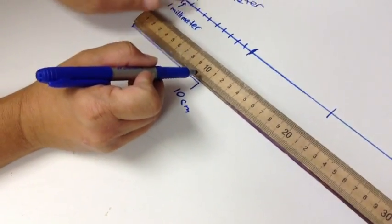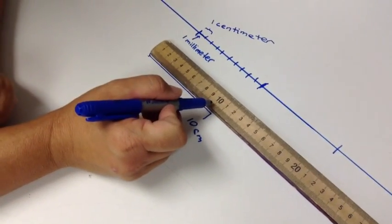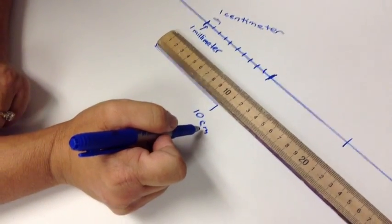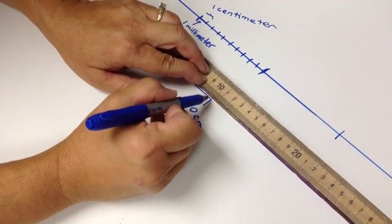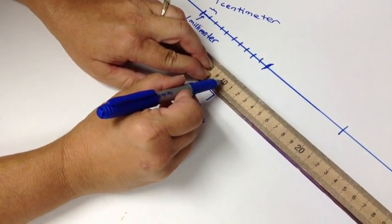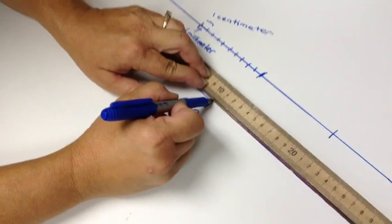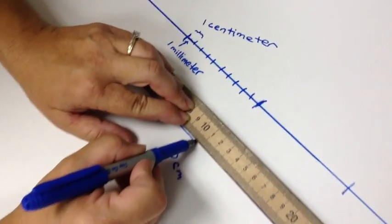Ten of those little things - they put the numbers on the centimeters. But let's say my line doesn't go exactly on that nice big number 10, let's say it goes a little bit past it.